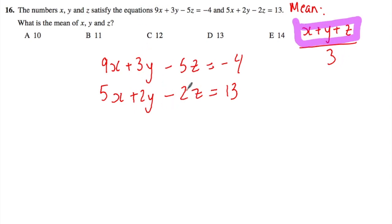That's my goal here: how can I find x + y + z? I need to subtract these in a certain way to get x + y + z. What I'm going to do is double this equation. Let's multiply this equation by 2, which gives me 10x + 4y - 4z = 26.